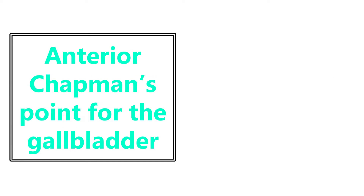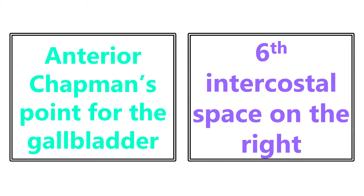Anterior Chapman's point for the gallbladder — high yield, you need to know it. It is the 6th intercostal space on the right, which is about where the gallbladder is. Note: on the exam, they usually won't give you adjacent intercostal spaces as options because this information can vary across resources. Anterior Chapman's point for the gallbladder is the 6th intercostal space on the right.